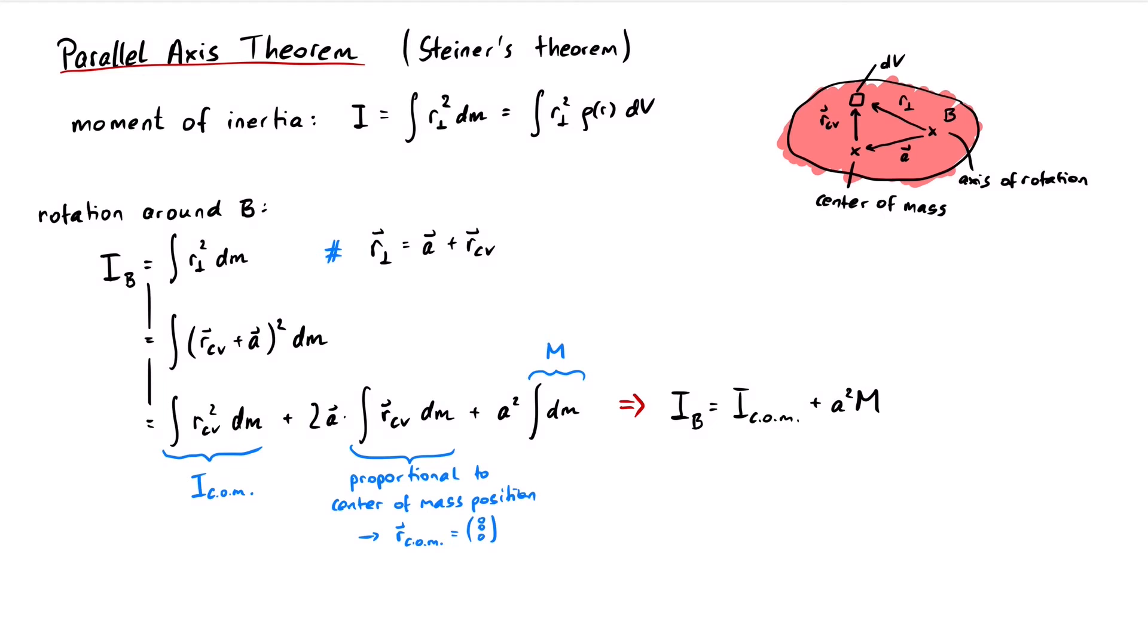One last thing to mention is that the last term itself can be interpreted as the moment of inertia for a point particle. So for a rotation around a random axis, we can pretend that the whole object is concentrated in the center of mass, and then add the moment of inertia for a rotation around the center of mass.